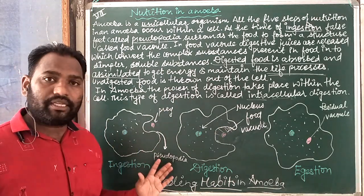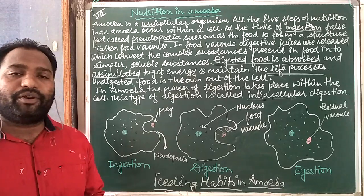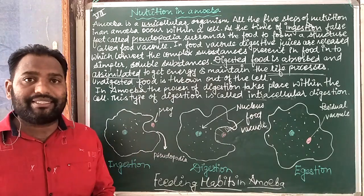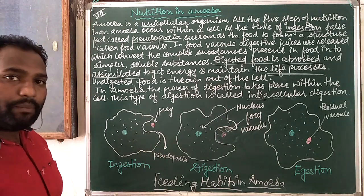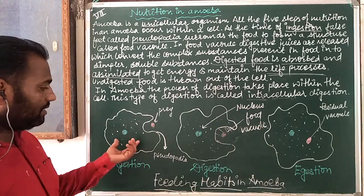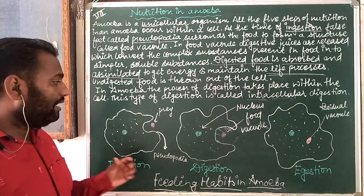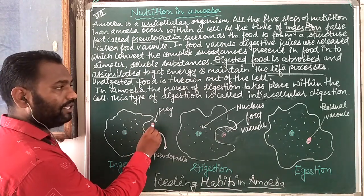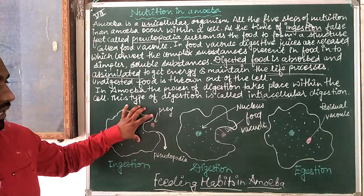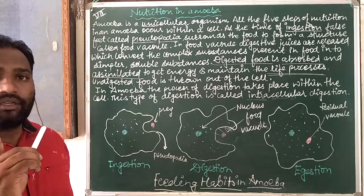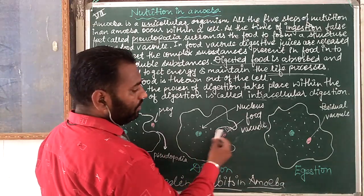Now let's look at the mechanism of feeding habits of amoeba. When food is available, pseudopodia — the false feet — develop at any part of the cell body. When the prey is seen, it is surrounded by the body structure and the formation of food vacuoles occurs. These food vacuoles secrete digestive juices, which also help take food inside the body.